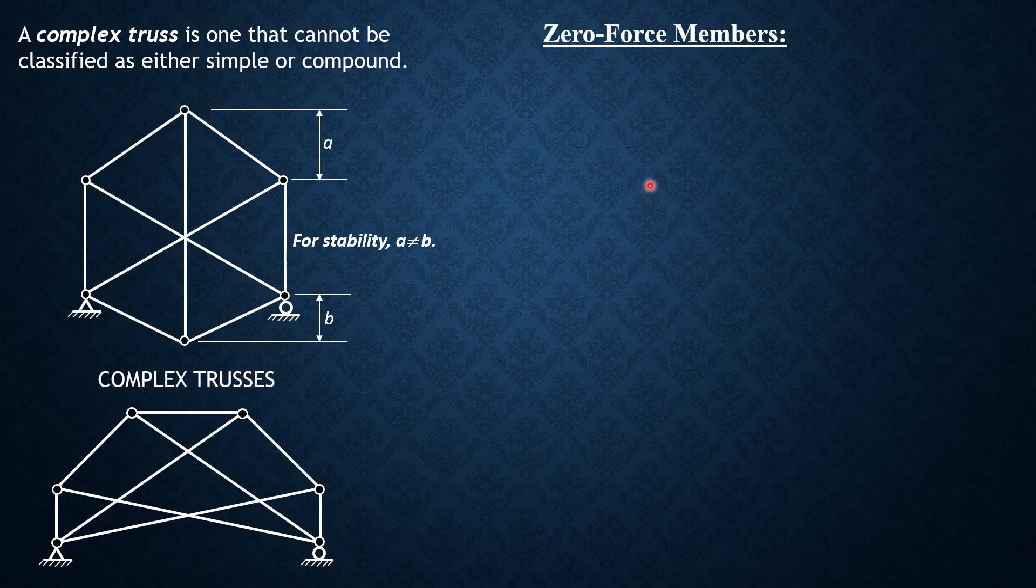To facilitate the analysis of trusses, there's a need to identify zero-force members. These members do not carry any force, but we cannot omit them or remove them from the truss system because they help in the geometric stability of trusses.